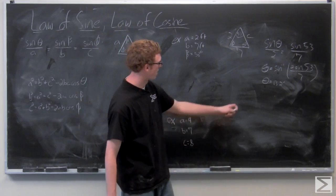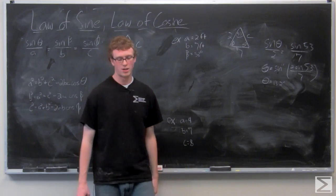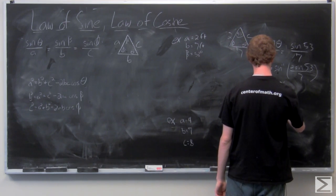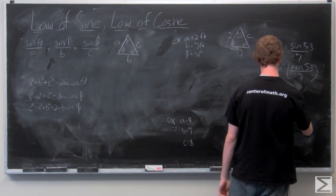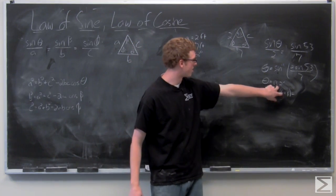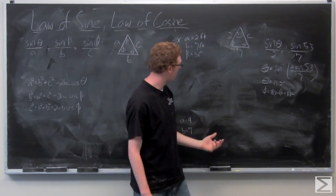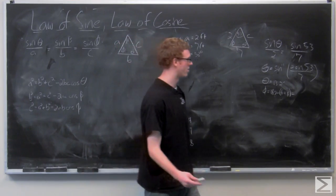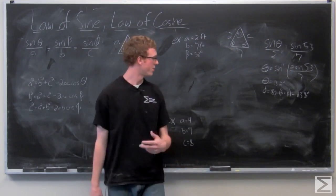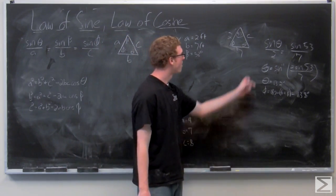Now that we have two angles — theta equals 13.2 degrees and beta equals 53 degrees — we just add them together and subtract from 180 to find phi. So 180 minus (13.2 plus 53) equals 180 minus 66.2 degrees, giving us phi equals 113.8 degrees. Now I'm going to switch over to the law of cosines and find the value for C.